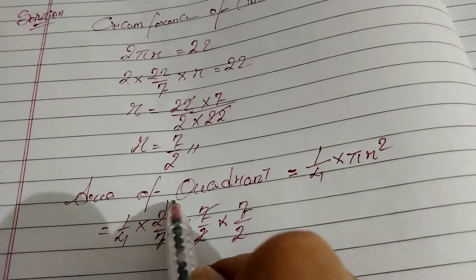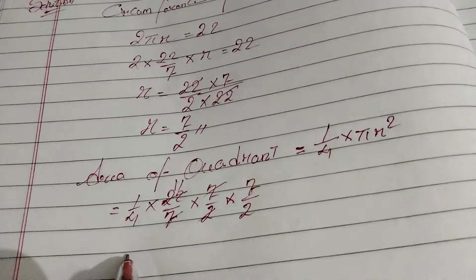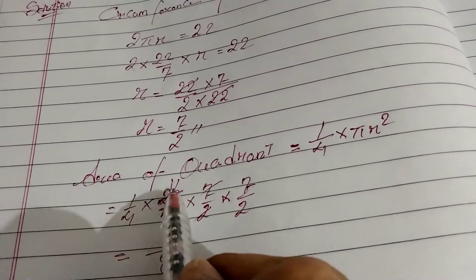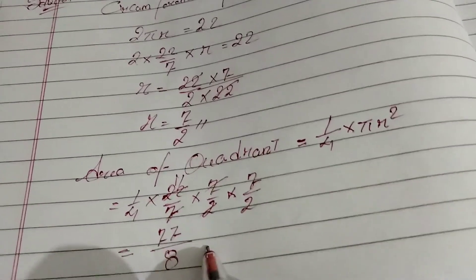So 4, 2, 8, right? 8 and 11, 7, 77 centimeter square.